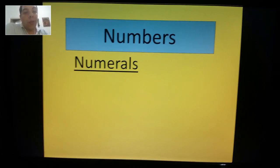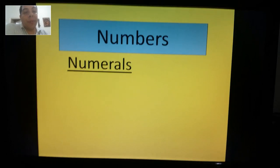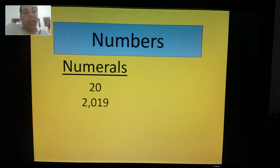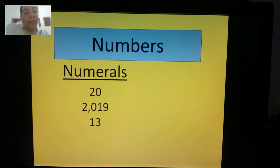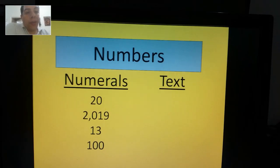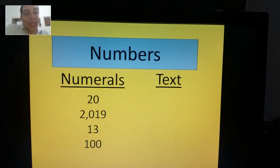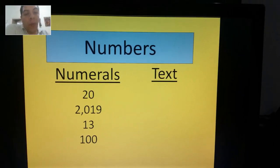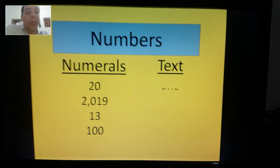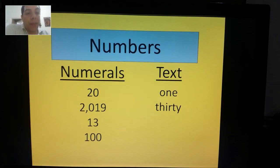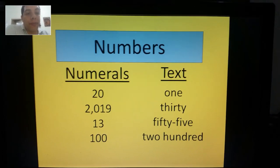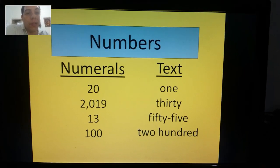See, we're gonna work on numerals. Numerals are those symbols, those digits you use to make numbers be expressed, like number 20, 2019, 13, 100. And on the other hand, text—it's the numbers but we won't use numerals, no, we'll use ABCs, we'll use words. One, for example, 30, 55, and 200. See the difference between numerals and text when expressing numbers?